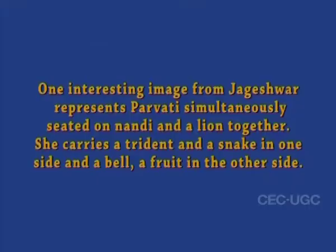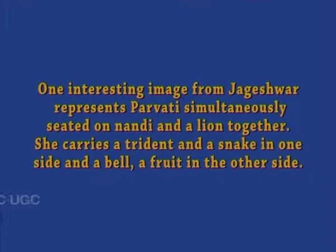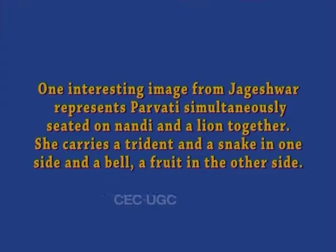One more example of Asana Murti is from Sanghaleshwar, Chamoli. Here Parvati is seated on Nandi in Lalita Asana, shown with four arms carrying a fruit in the front left, Shakti in the back left, snake in the back right, while the front right hand is in Abhaya Mudra. One interesting image from Jogeshwar represents Parvati simultaneously seated on Nandi as Asana Murti and a lion together. She carries a trident and a snake on one side, and a bell and a fruit on the other. Asana Murti over a Shivalinga is also significant, preserved in the collection of Bharat Kala Bhavan, Varanasi.